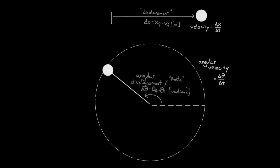The symbol we use to represent angular velocity is the Greek letter omega, which looks like a W but it's really the Greek letter omega. The units of omega, angular velocity, are going to be radians per second, since delta theta is in radians and the time is in seconds. Just like how regular velocity had units of meters per second, angular velocity has units of radians per second.